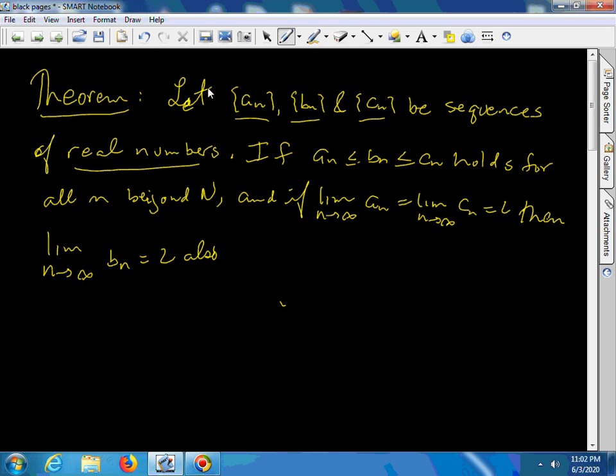And they are all real numbers, and it turns out that you have this property, that bN is jammed between aN and cN after some point. It doesn't have to be initially, because the conclusion is only talking about as n goes to infinity.